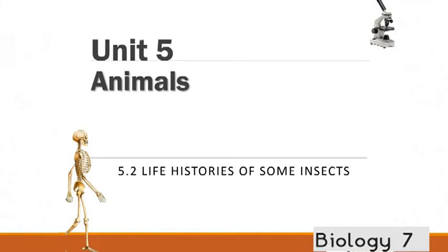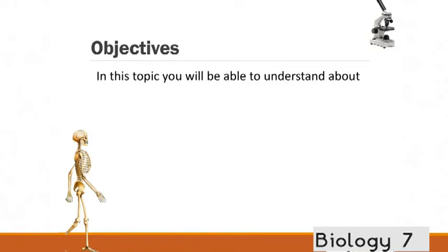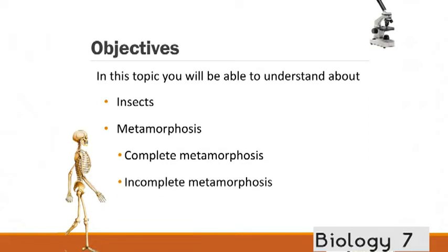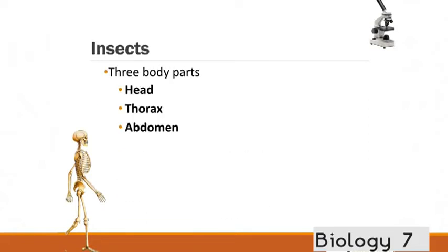These are the slides for Unit 5.2. Life histories of some insects. And by the end of this unit, you're going to know a bit about insects and a process called metamorphosis. You're going to learn about complete metamorphosis, as well as incomplete metamorphosis. So, let's just break down what an insect actually is. They've got three main parts. A head, a thorax, and an abdomen.